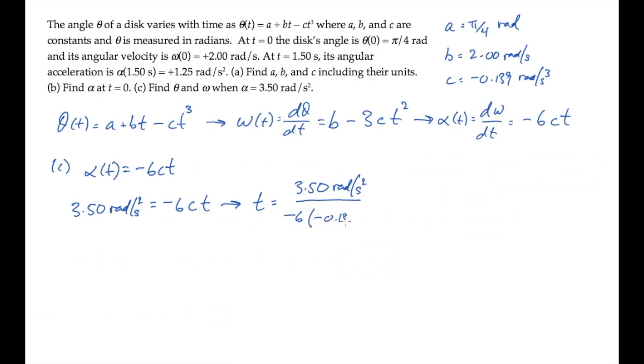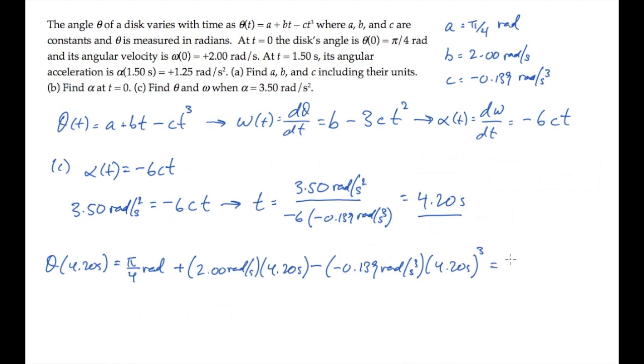At t equals 4.20 seconds, alpha is 3.50 radians per second squared. Now we can substitute that value of time into the expressions for theta and omega. First for theta, it equals a plus b times the time minus c times the time cubed, and you get 19.5 radians.